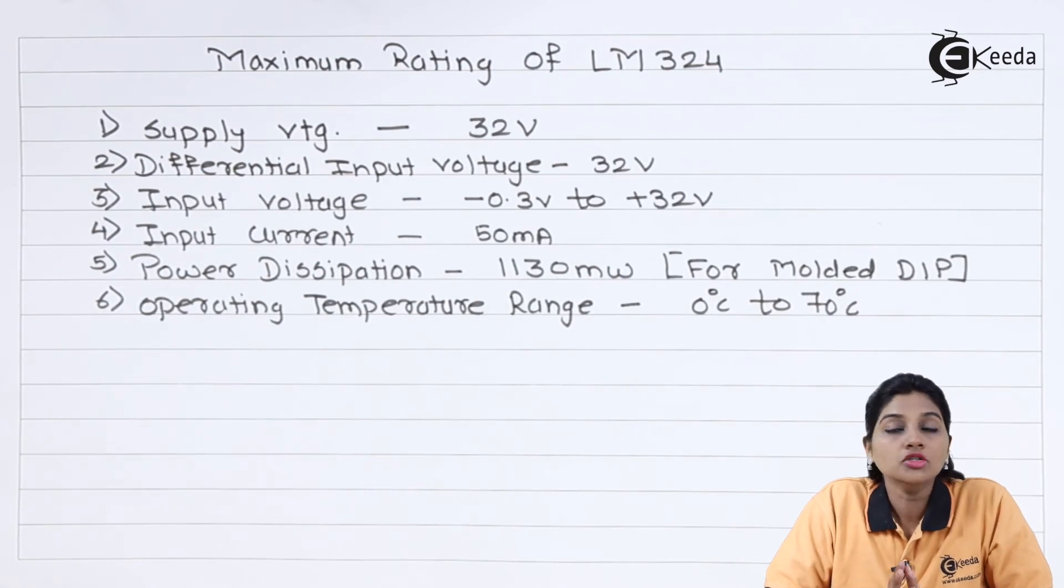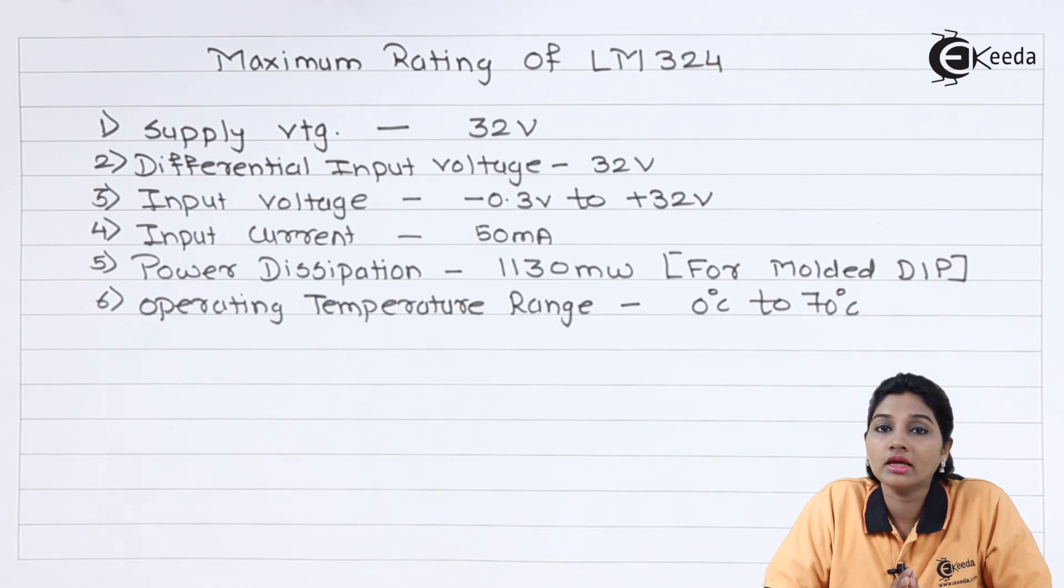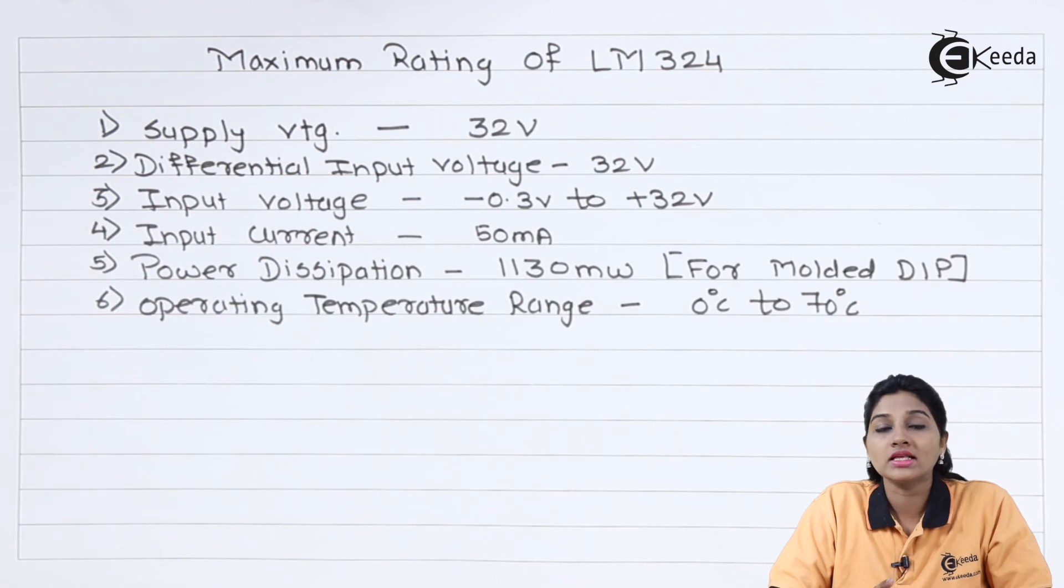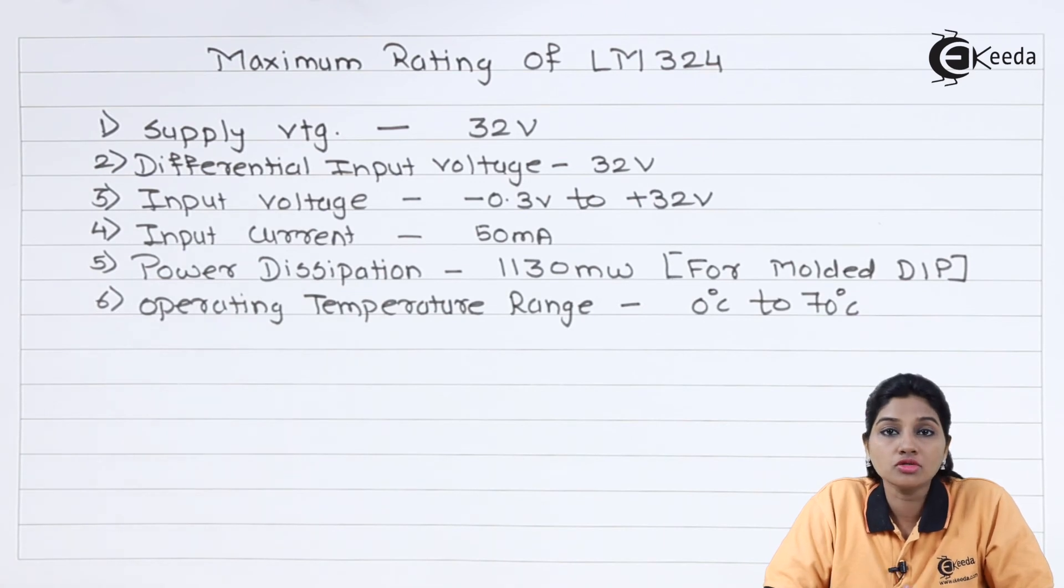So this is about LM324 in which we have 4 independent high gain operational amplifier ICs which can be used to implement number of different conventional operational amplifier circuits that can also be implemented by using IC 741C. So as it has 4 different independent op-amps, it reduces the space requirement rather than 741C IC. So this is about LM324.